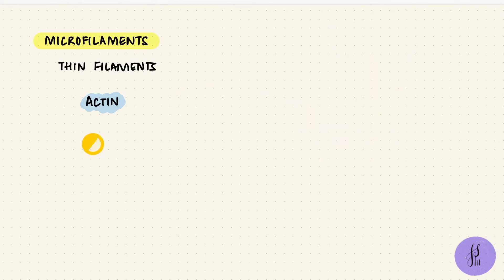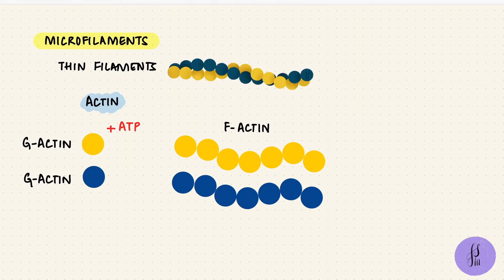They start with monomer subunits called globular actin or G-actin. These are bound to ATP rather than GTP in microtubules. These actin monomers polymerize, so they join together to form a filament, ultimately forming F-actin, which includes two filaments that wind around each other.